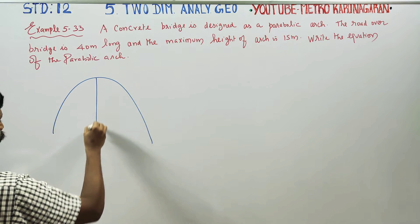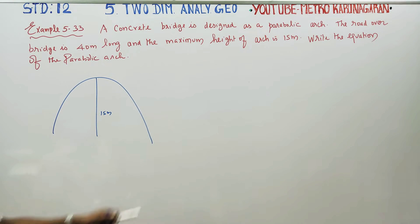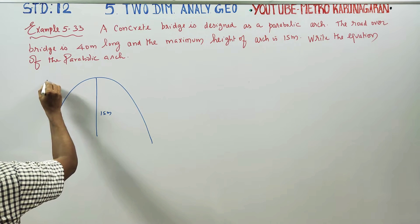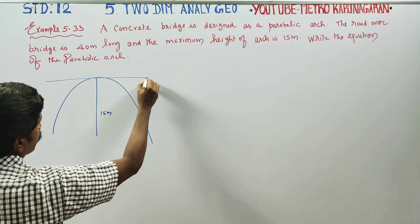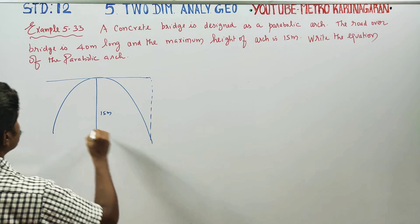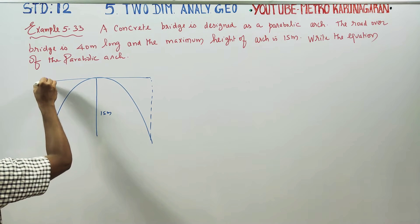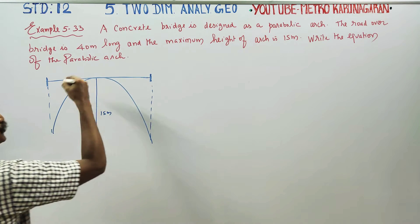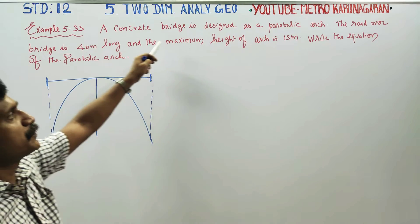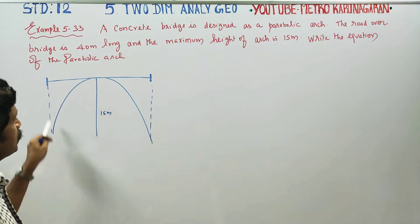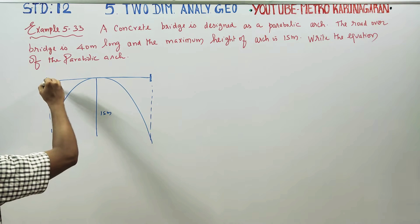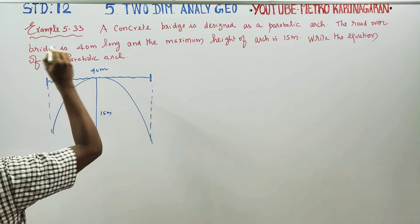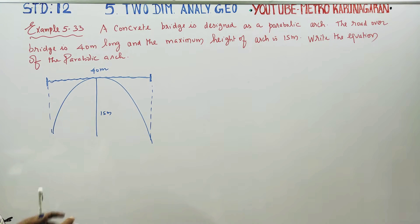This height is 15 meters. A road over the bridge is 40 meters — here is the road. This is the road over the bridge; the road over the distance is 40 meters long. How to write the equation of this arch?